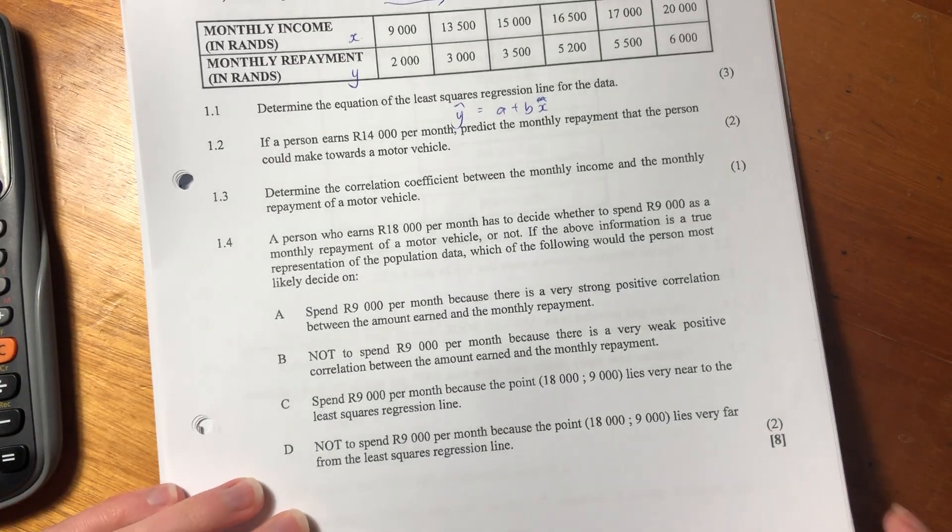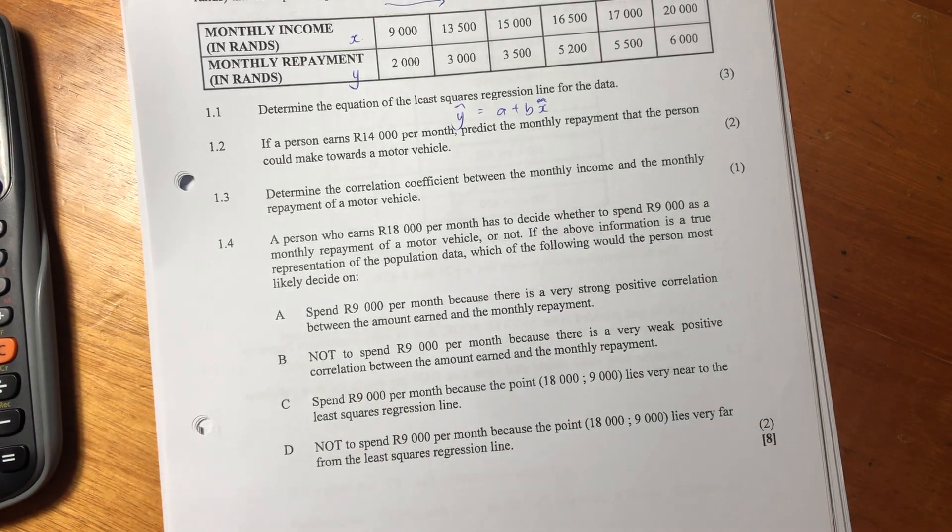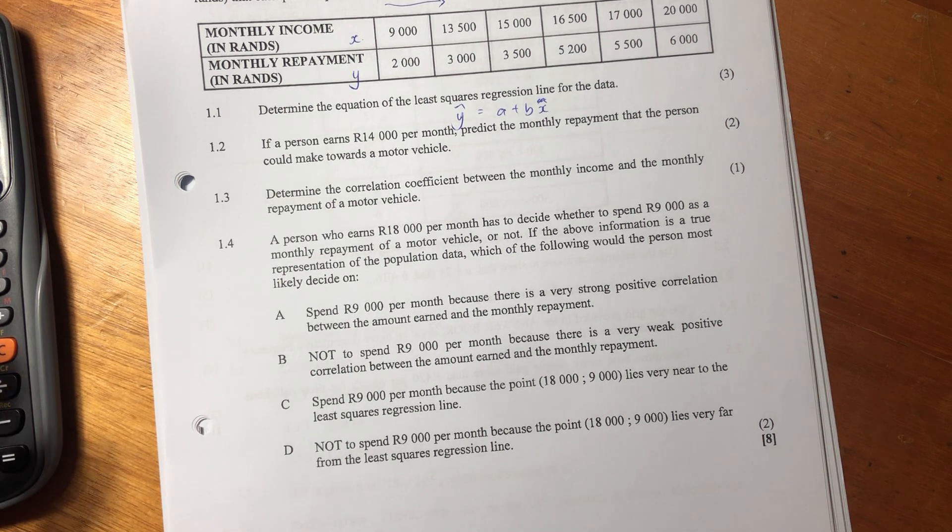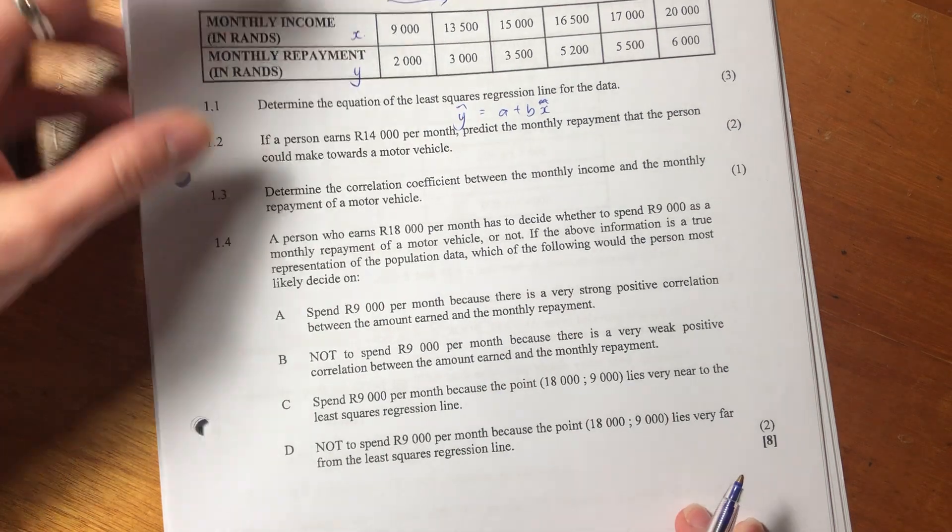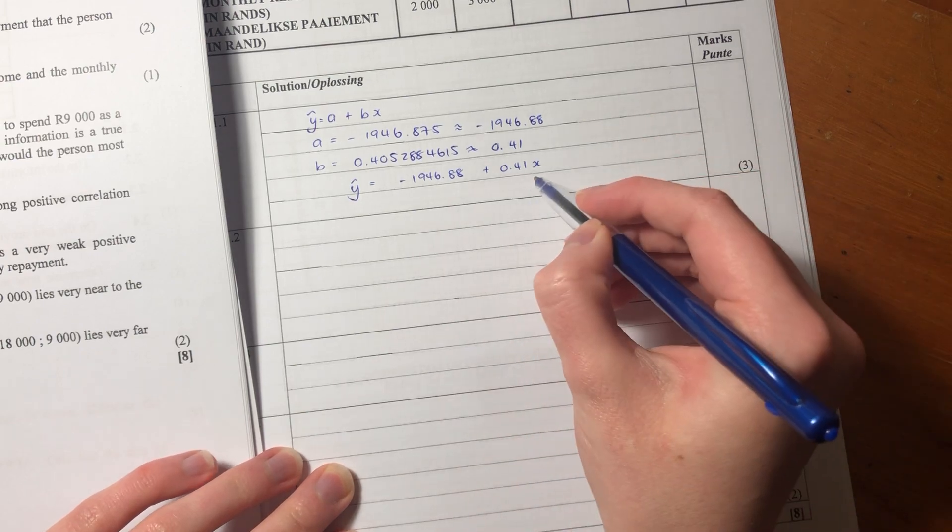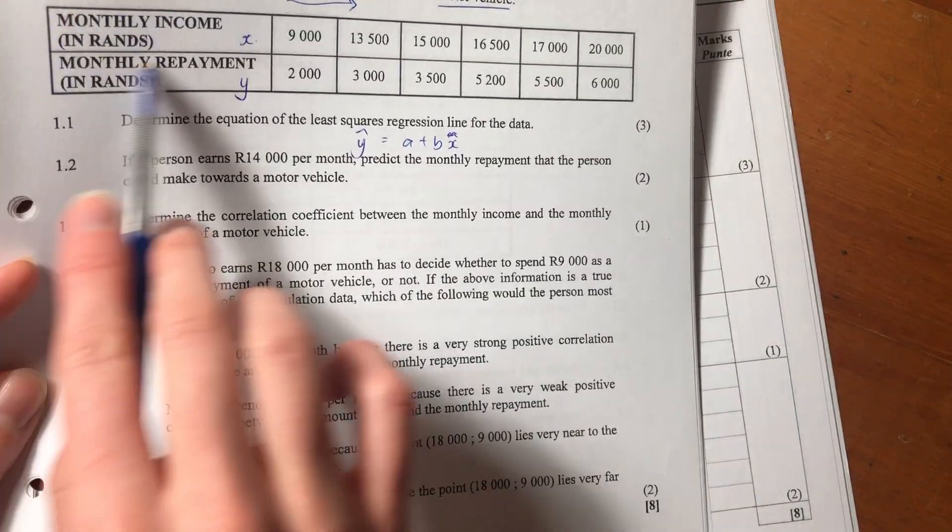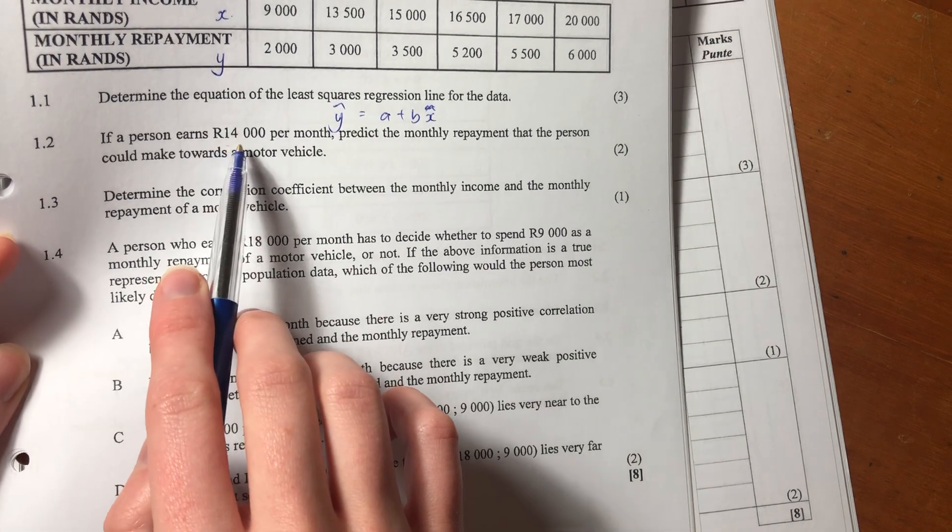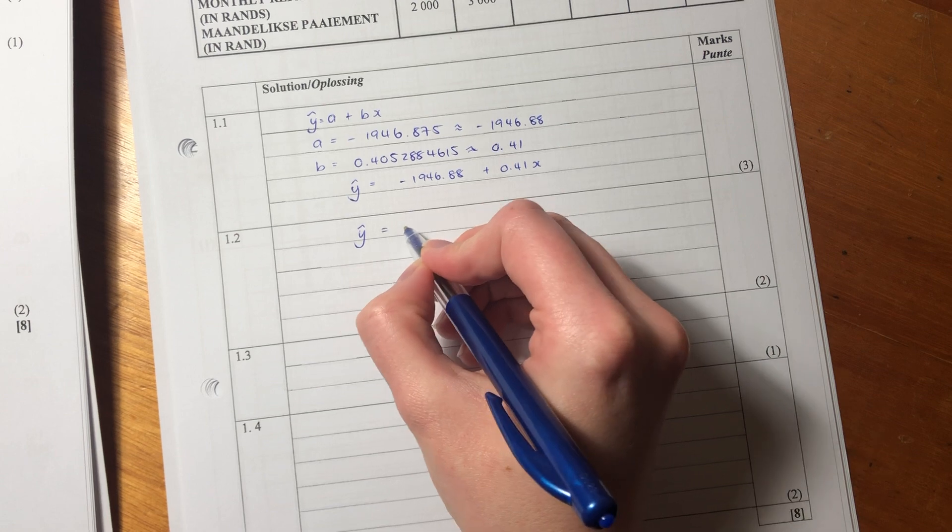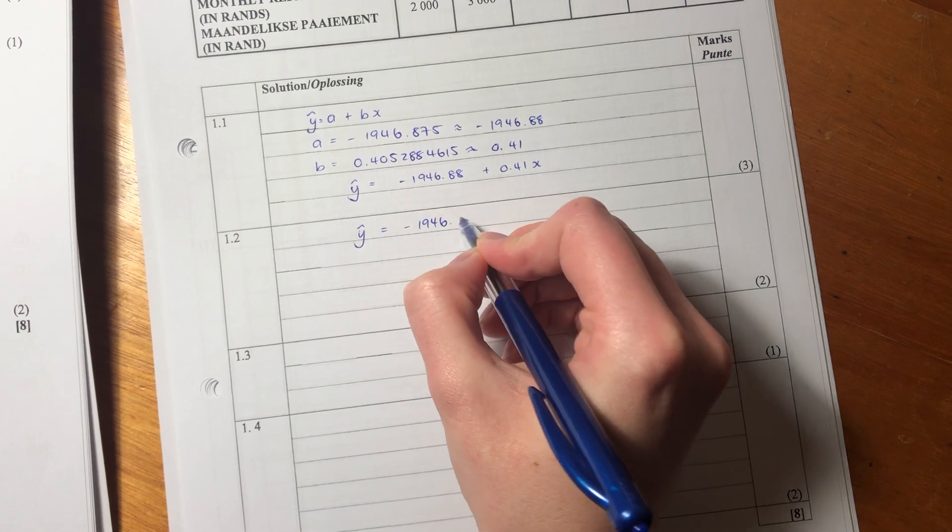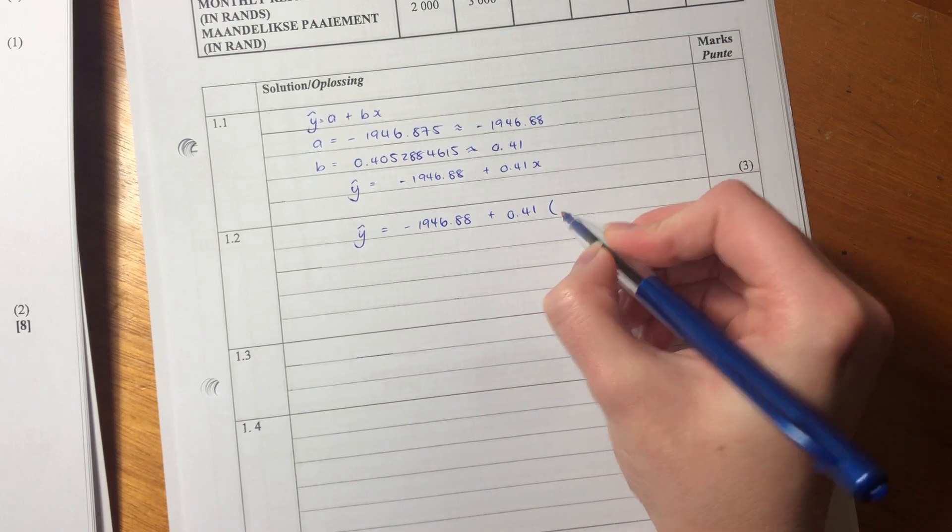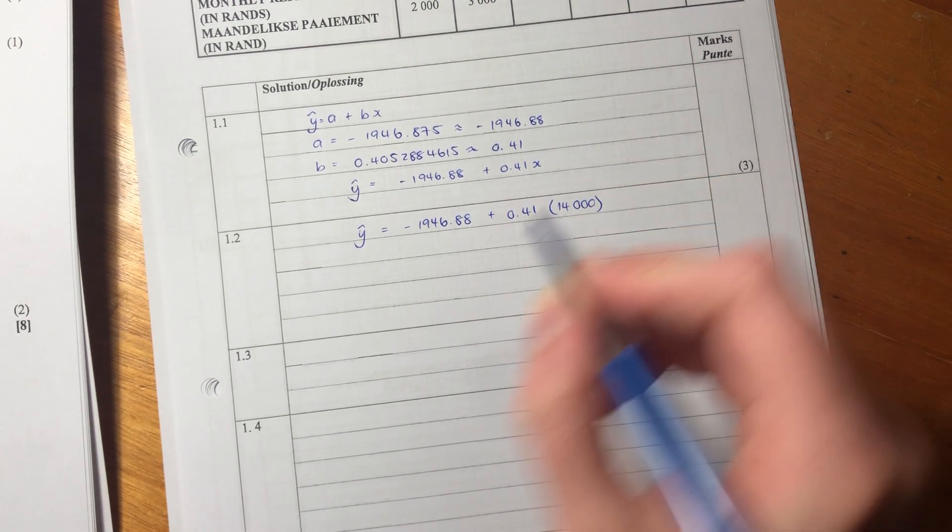So that's 1.1. Let's now do 1.2. It says, if a person earns 14,000 Rand per month, predict the monthly repayment that the person could make towards a motor vehicle. So it's basically saying, use this least squares regression line. Sub in an X value. Remember X values are monthly income. So sub in an X value of 14,000 and see what your Y value will be. So this is an interesting one because all they're asking you to do here is they're literally asking you to just demonstrate that you understand the relationship.